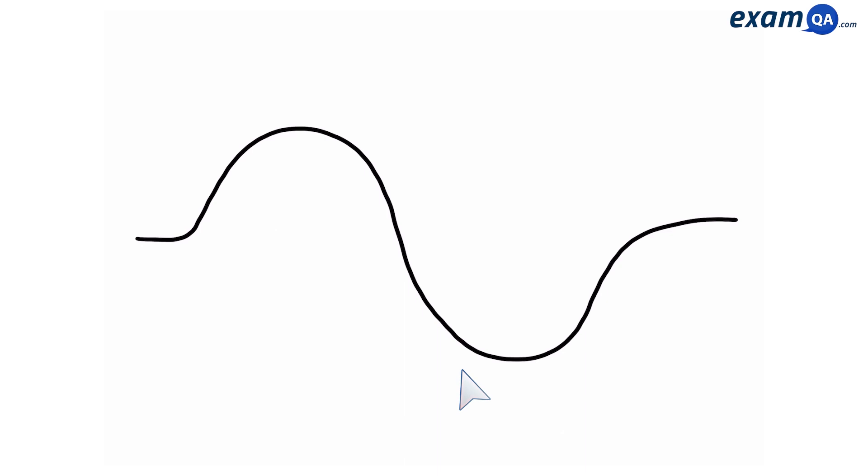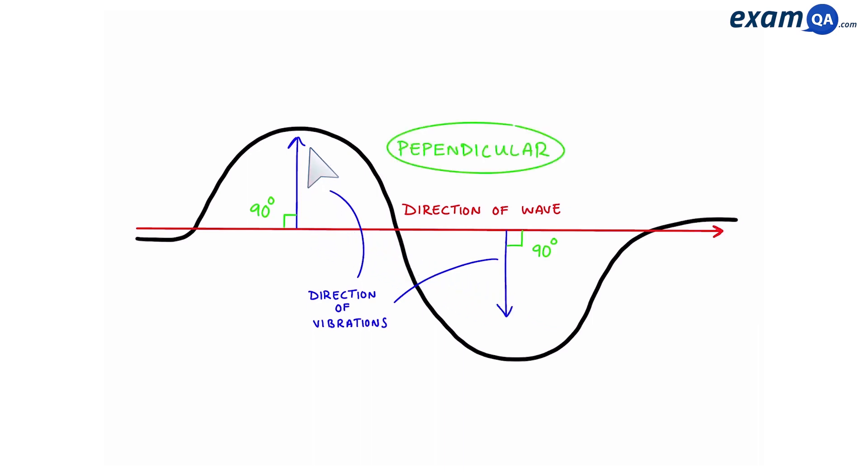So let's look at this wave in a bit more detail. We can see that the wave is moving in this direction. However, the vibrations are not parallel like before. Instead they are 90 degrees to the direction of the wave, or in other words they are perpendicular.